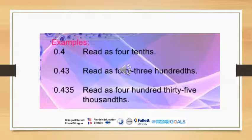Let's move to the third example: 0.435. Let's count the decimal places — how many digits do we have after the decimal point? We have four, three, and five — three digits after the decimal point, so three decimal places. We read it as 435 thousandths.